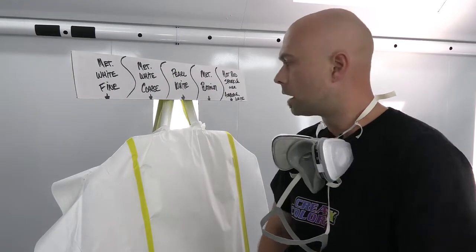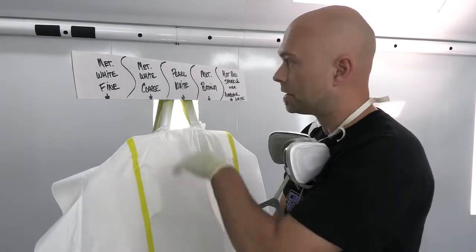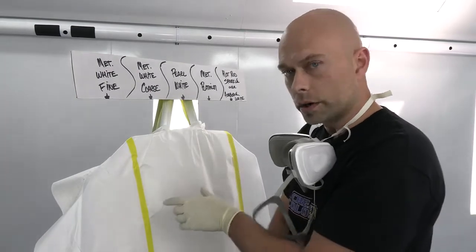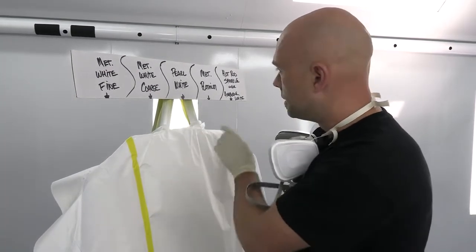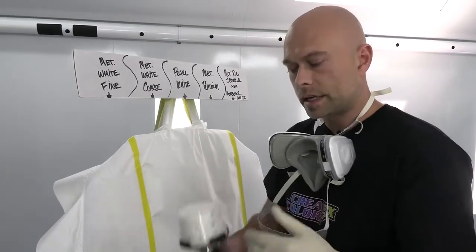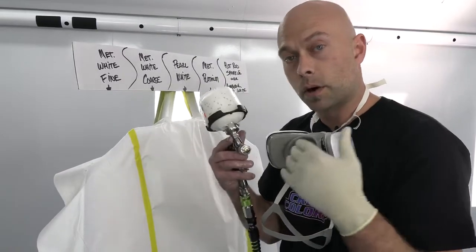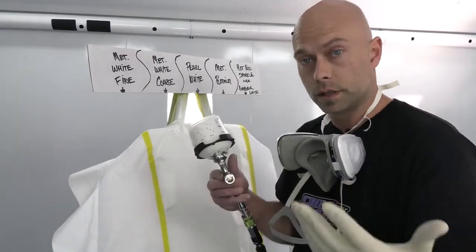Okay everyone, we're back. All these sections are sprayed. We did the metallic white fine, metallic white coarse, pearl white, and metallic platinum. Now we're going to talk about our hot rod sparkle white over our autoborn white sealer. We love this. It's a very clean, crisp pearl white flake.